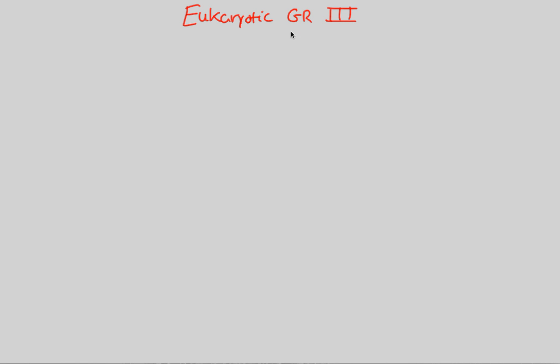As we continue our discussion on eukaryotic gene regulation, we're going to move forward by looking at a different form of regulation besides chromosome structure. This next flowchart will be entitled Eukaryotic Gene Regulation III — or GR Roman numeral 3 — and this entire flowchart will be devoted to regulation at a specific transcriptional event known as initiation, transcription initiation.